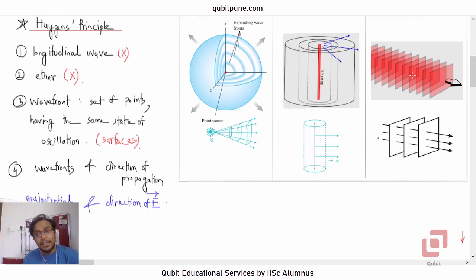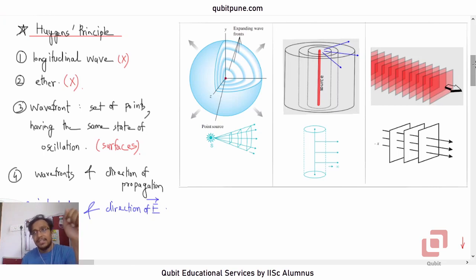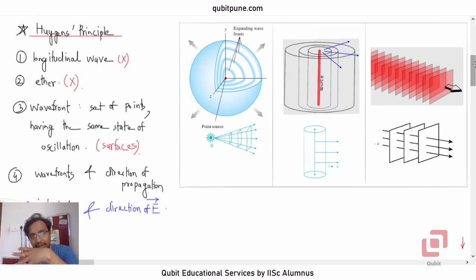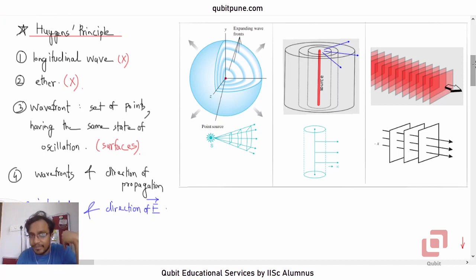What exactly is Huygens' principle? It tells us that every point on any wavefront is going to act as a secondary source of light. Secondary sources do not produce light on their own; they receive light from some other source and then spread it everywhere. Every point on that wavefront acts like a secondary source sending secondary wavelets in all directions, and wavelets traveling backwards are ineffective.